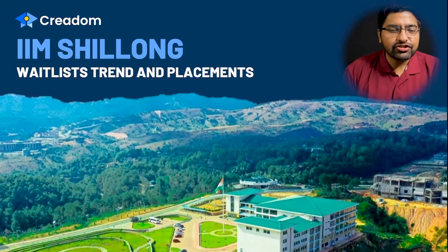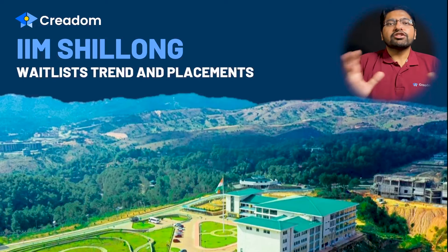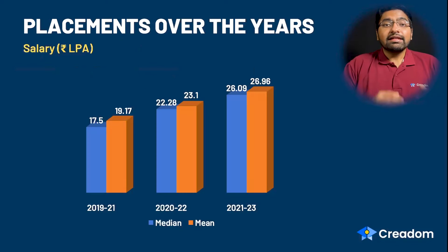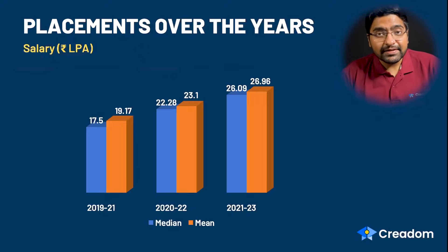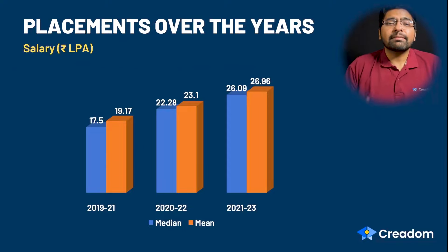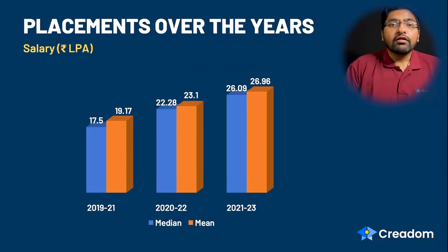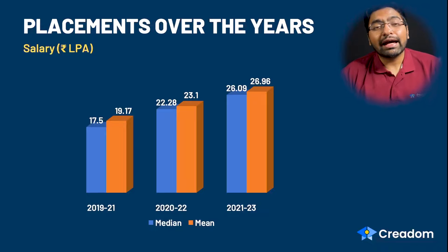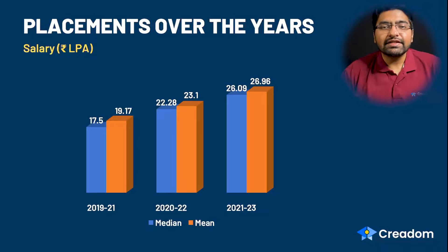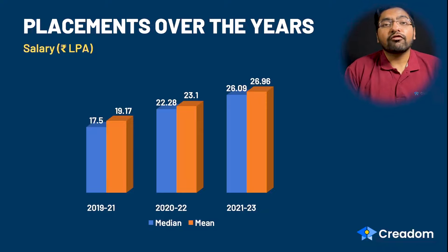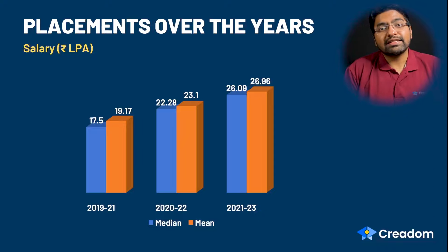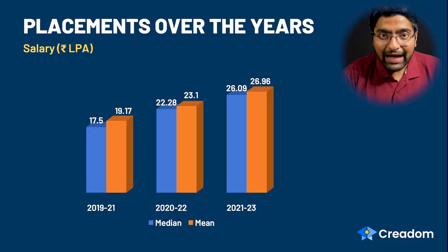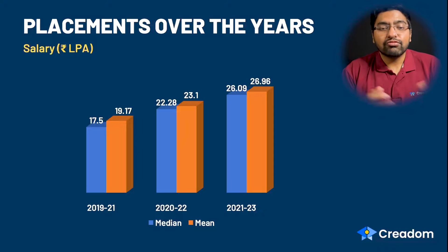Let's begin by understanding how placements are at IIM Shillong. It's very heartening to see that placements have been steadily increasing — the same trend you'd see with IIM Kozhikode and IIM Udaipur. The average salary at IIM Shillong stands at 26.96 lakh per annum, whereas the median salary stands at 26.09 lakh per annum — a good number.